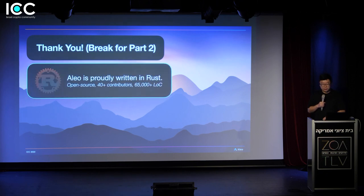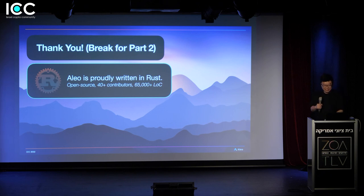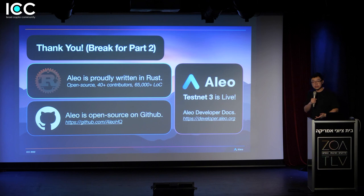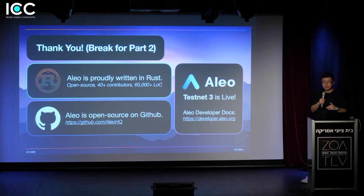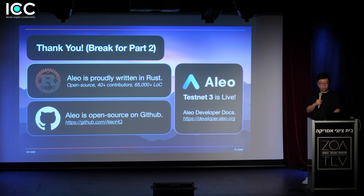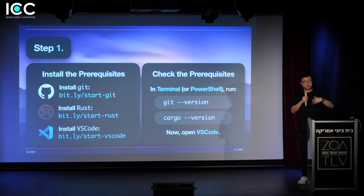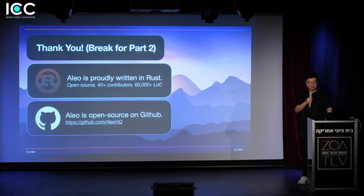We're going to break for part two. Aleo is proudly written in Rust. It's open source with 40-plus contributors and 65,000-plus lines of code and growing. We just launched Testnet 3, which is now live for those interested. Stay for part two where we'll go through a lot of the development fronts. Developer docs are available at developer.aleo.org. For those sticking around for part two, the prerequisites you'll need are Git, Rust, and an IDE — preferably VS Code. I'm going to do a live demo of six applications, and you're welcome to follow along on your machine as well.